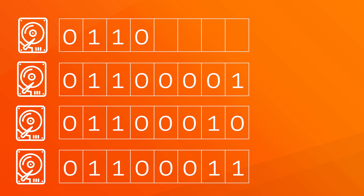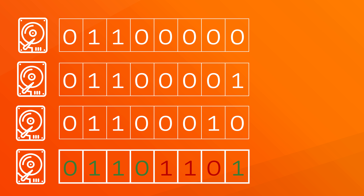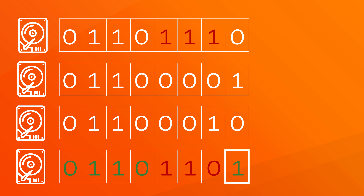And so on for all other slots. If we now add together the value in each slot, including the parity, we always get an even number. If we want to change something we have saved on a disk — let's say we change the letter C to a letter M — it will check if a value changes, and for each change it also flips the value in the parity. M is 0, 1, 1, 0, 1, 1, 0, 1. So the first 4 numbers stay the same. The next 3 numbers have changed, so the parity also has to change to keep the sum even. The last number stays the same, so the parity does not have to change.